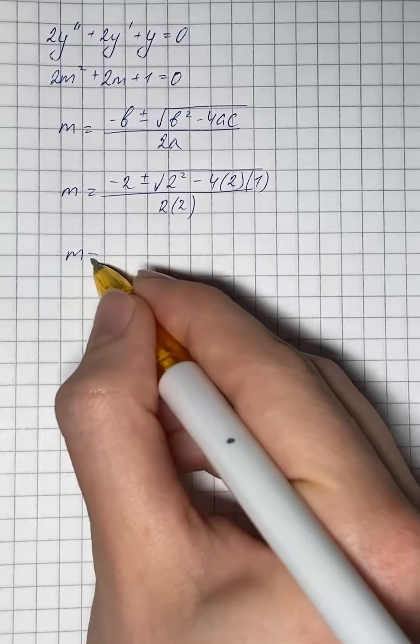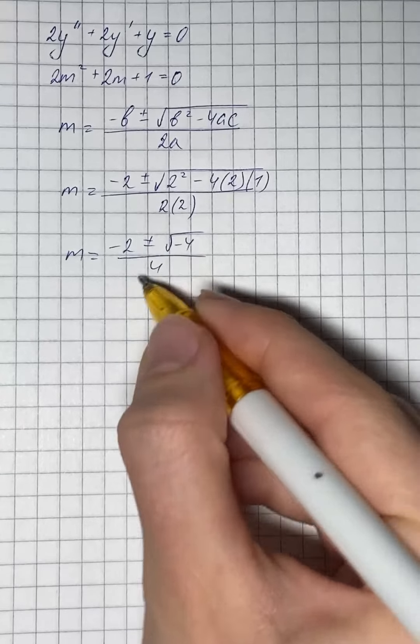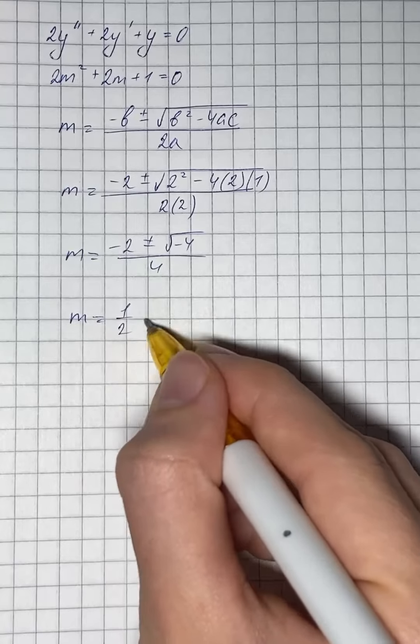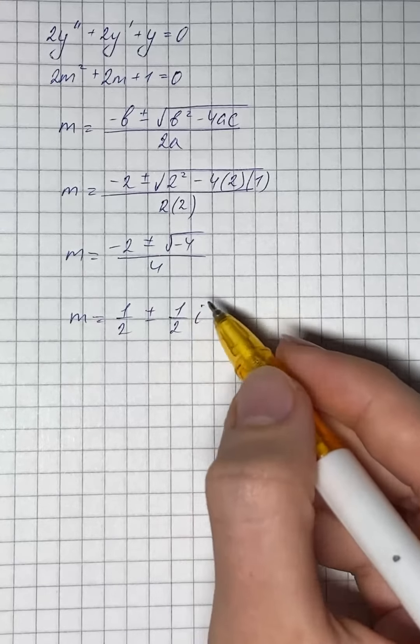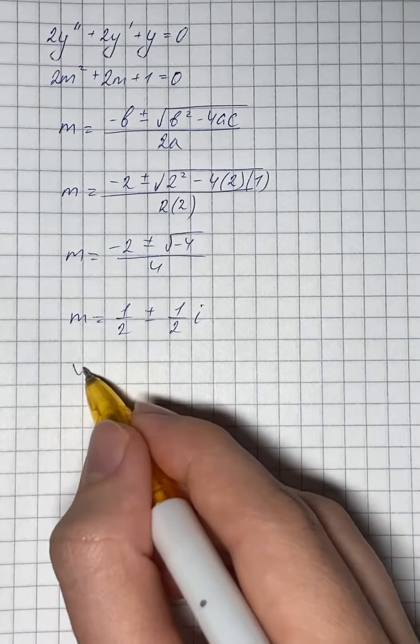So m equals negative 2 plus or minus square root of negative 4, all over 4. So m equals negative 1 half plus or minus 1 half i.